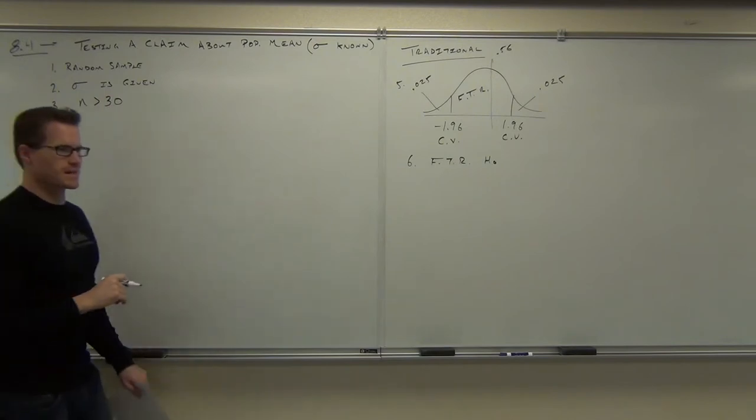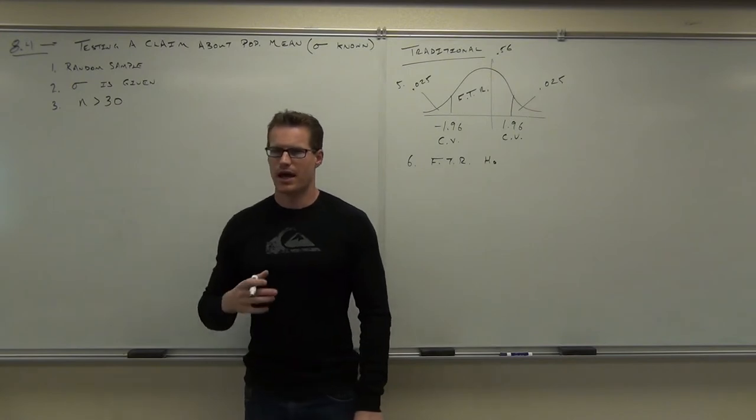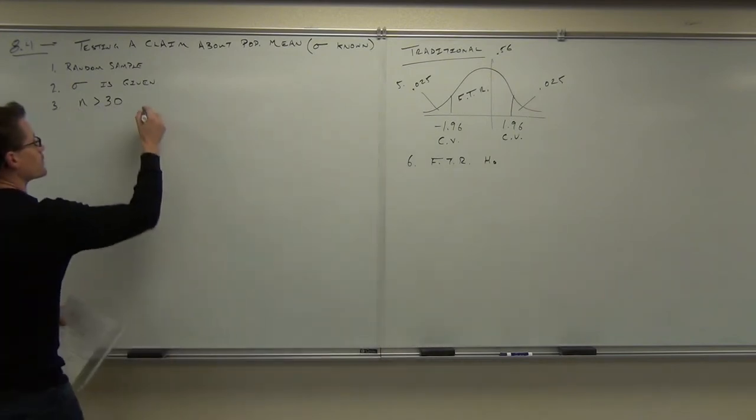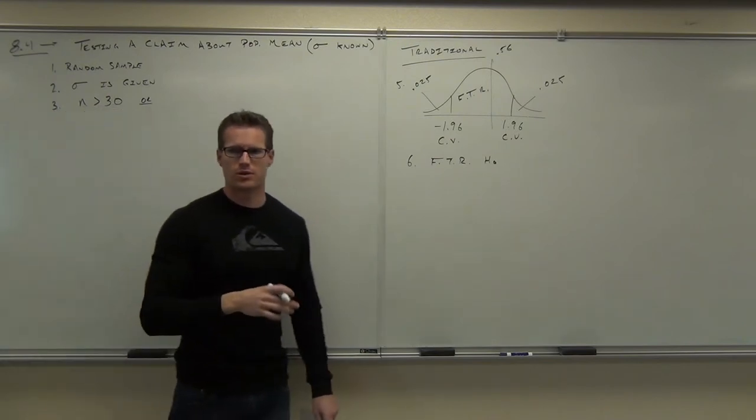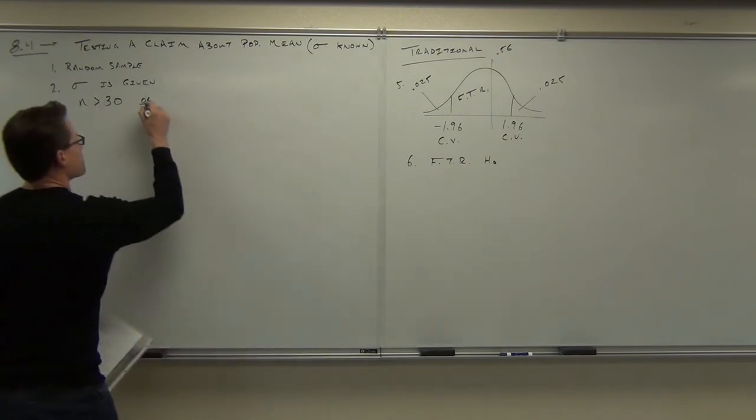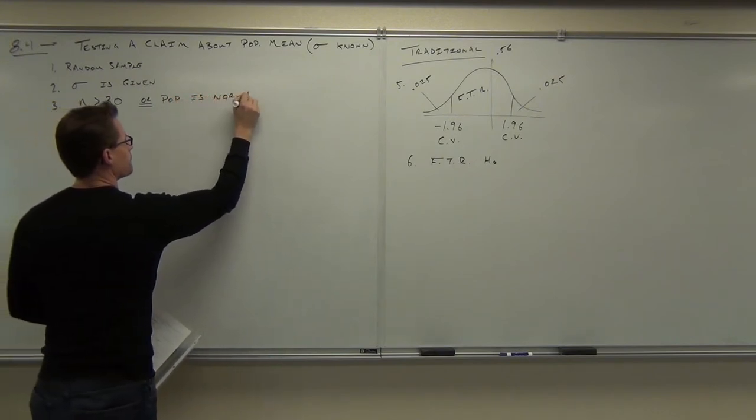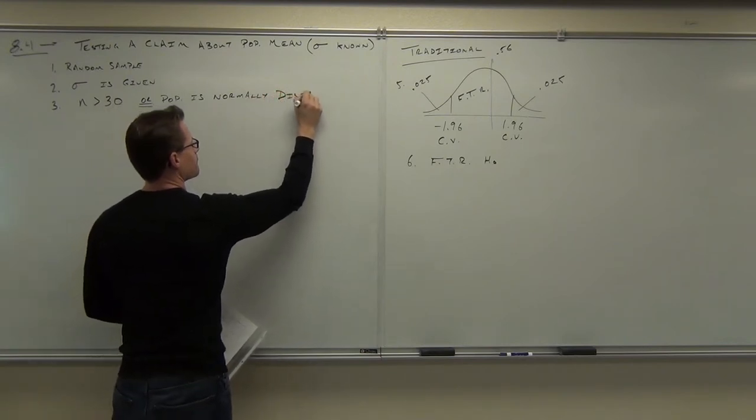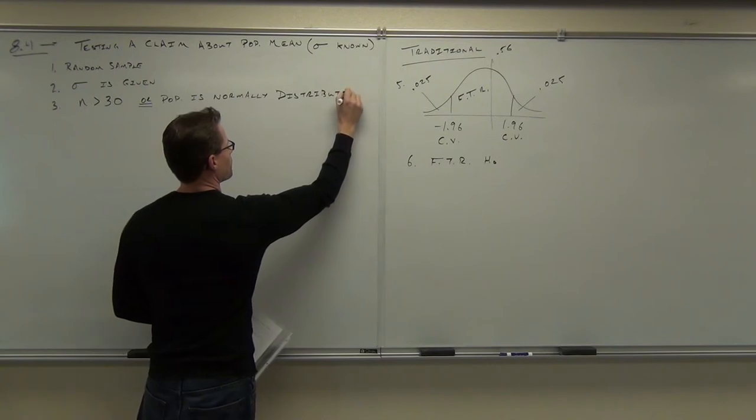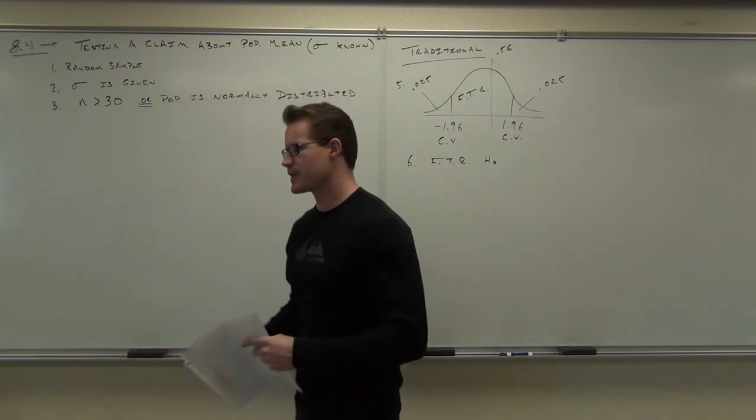Did that necessarily have to be there no matter what? What was the other thing that we could have if N wasn't greater than 30? Yeah, or the population is normally distributed. This went back to the central limit theorem, chapter 6, where we learned about that stuff.